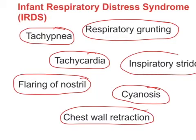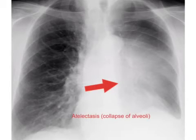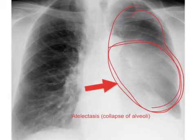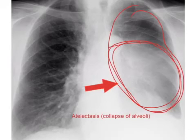Infant respiratory distress syndrome is one of the significant causes of mortality and morbidity in preterm babies. As the weeks of gestation decrease and premature birth occurs, the incidence of IRDS increases. Radiological features include collapse of the alveoli, which is referred to as atelectasis. The alveoli are totally collapsed because surfactant is decreased and alveoli cannot remain open.